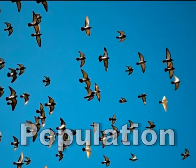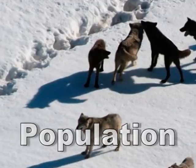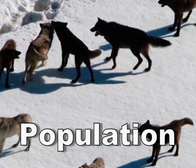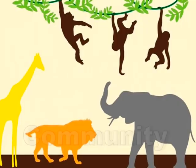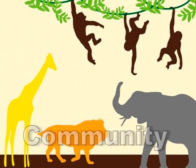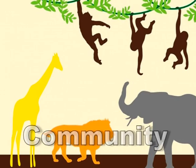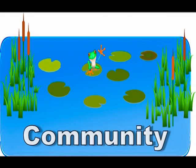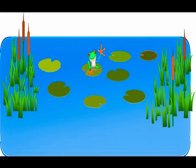Members of a species that live in the same place are called a population. Populations of different species living in the same place are called communities.